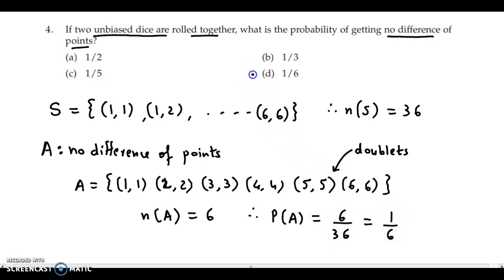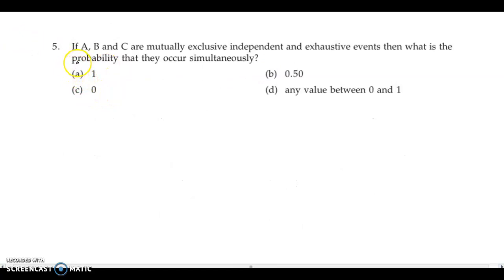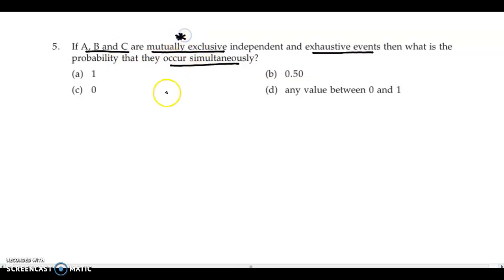So n of A is 6. Therefore, probability of event A is 6 upon 36, which is 1 by 6. That is the correct answer — option D. Now question 5: If A, B and C are mutually exclusive, independent and exhaustive events, then what is the probability that they occur simultaneously? The most important phrase here is 'mutually exclusive events.' Mutually exclusive events cannot occur at the same time, so the probability of simultaneous occurrence is option C — that is 0.